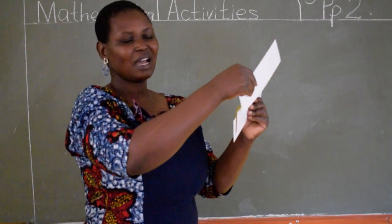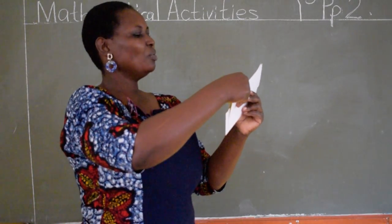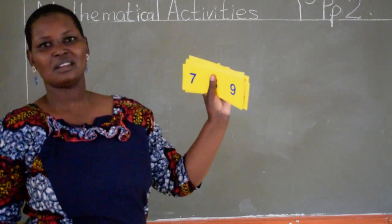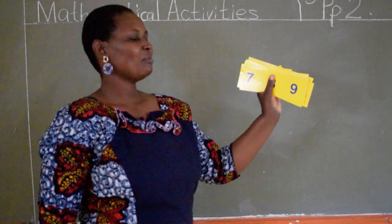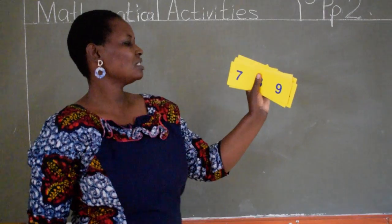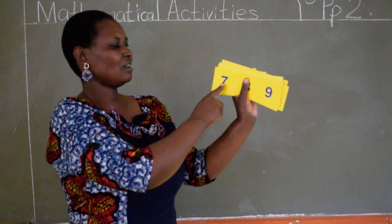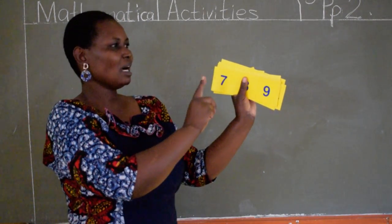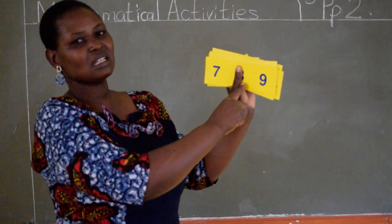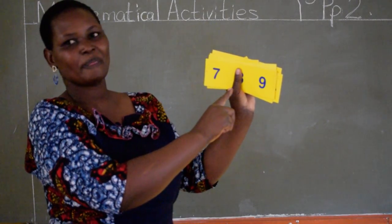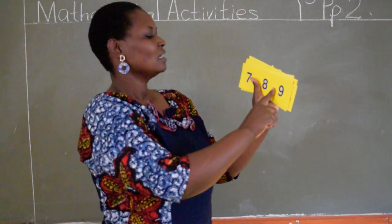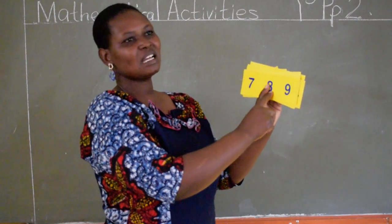Now, Alma, which number comes after number 7? Can you give it a try? Which number comes after number 7? When we are counting, we say 7, then the next number is number? Yes, Alma. That is very good. The next number is number 8.